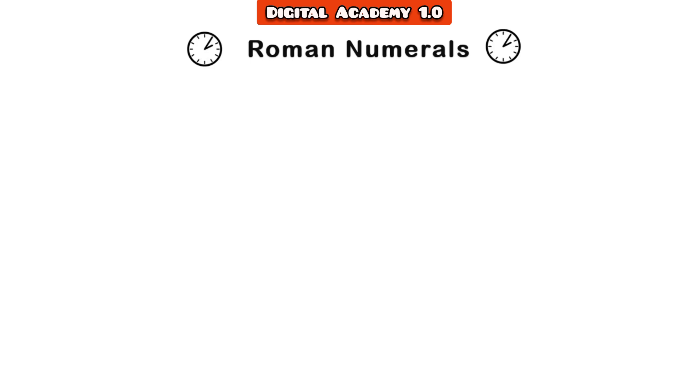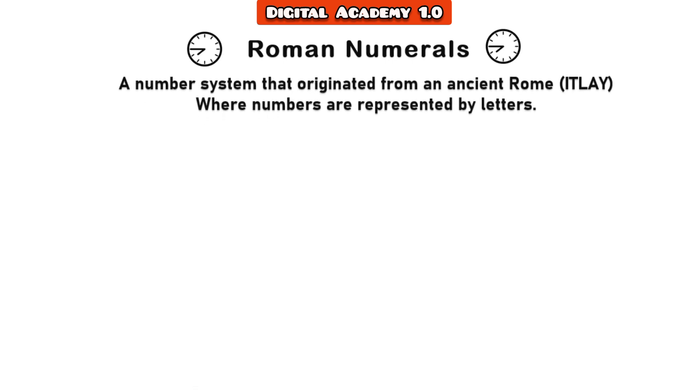Roman numerals: a number system that originated from ancient Rome, Italy, where the numbers are represented by letters. They are commonly used in clocks or clock towers, books, and paper sheets.